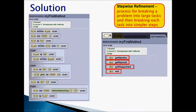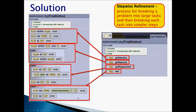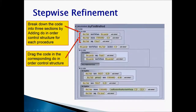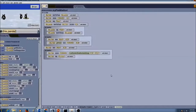Now we're going to take each of our large tasks and break them down into simpler steps. For Get Attention, Get Rejected, Get Disappointed, and End, we each have code. We're going to do a stepwise refinement on our code using our control structure 'do in order,' which executes statements in sequential order. Watch the video to see how to do a stepwise refinement on your Snow People code.